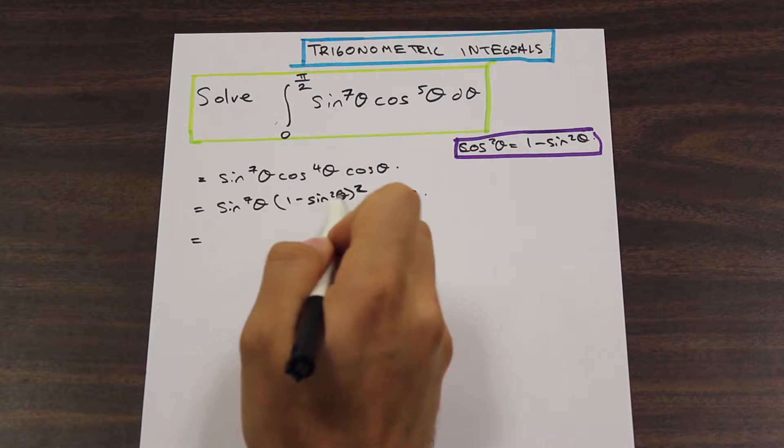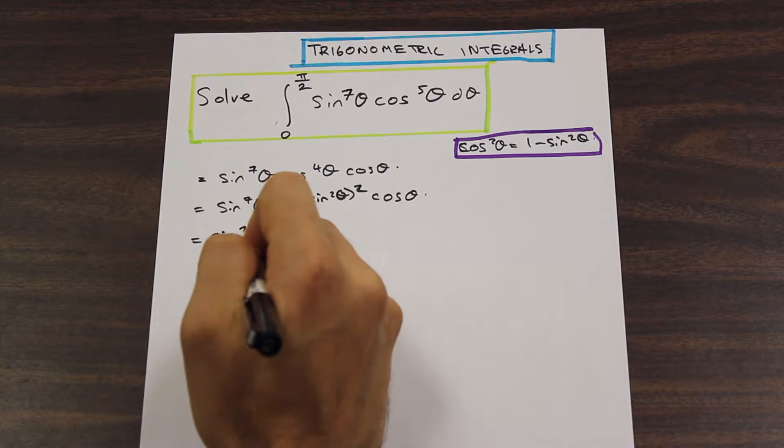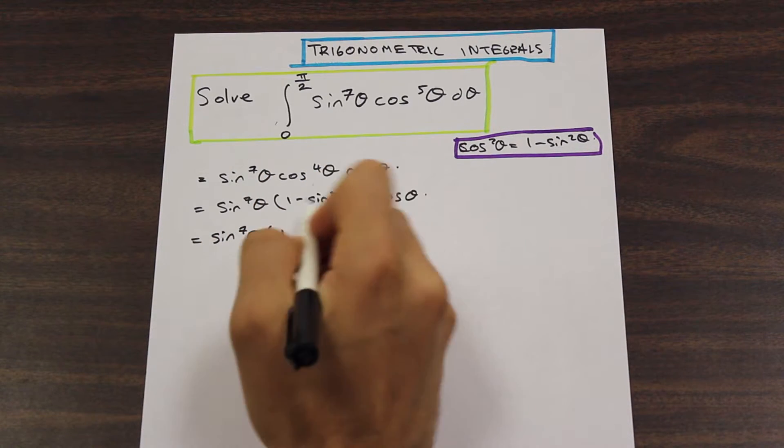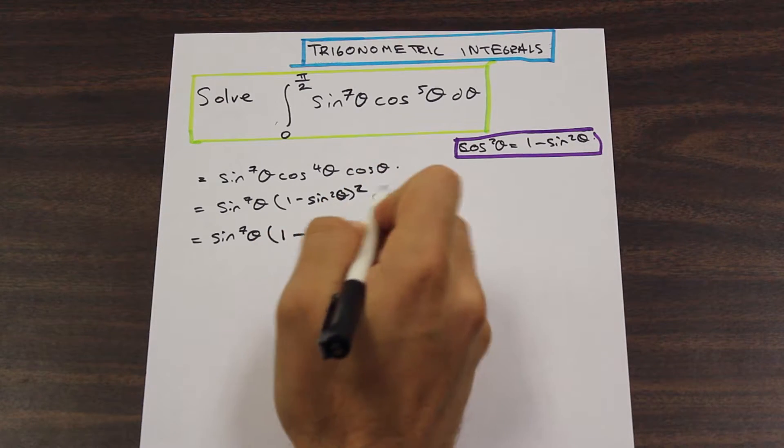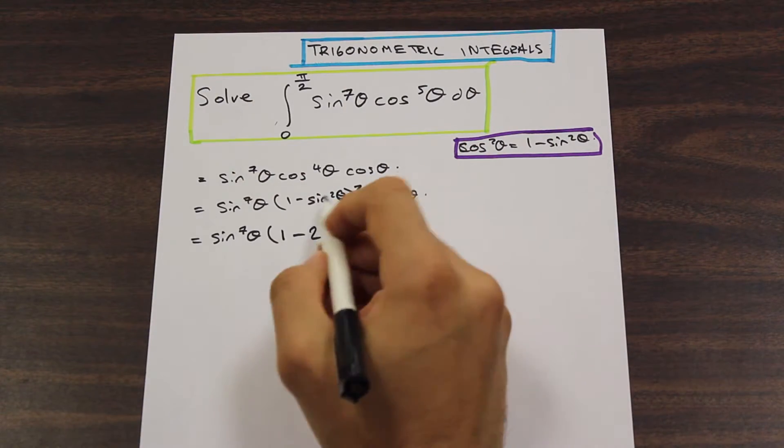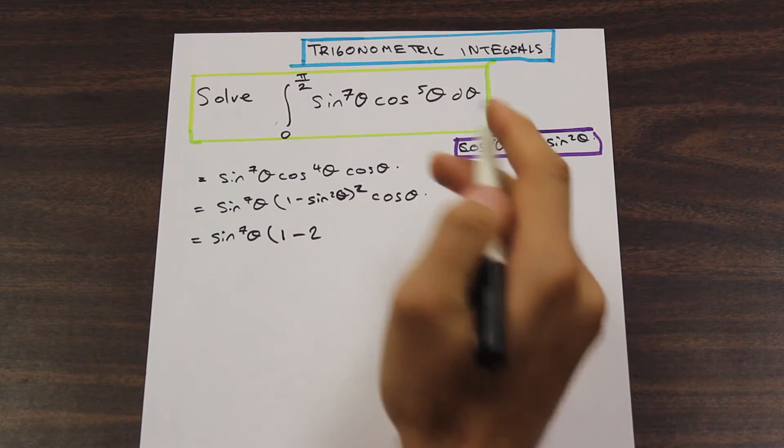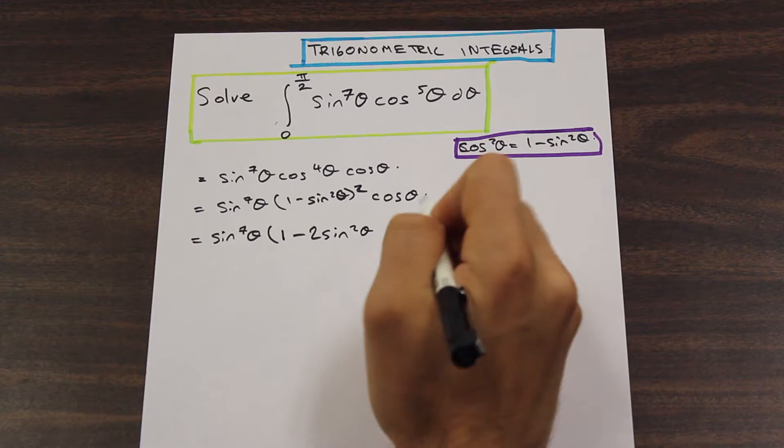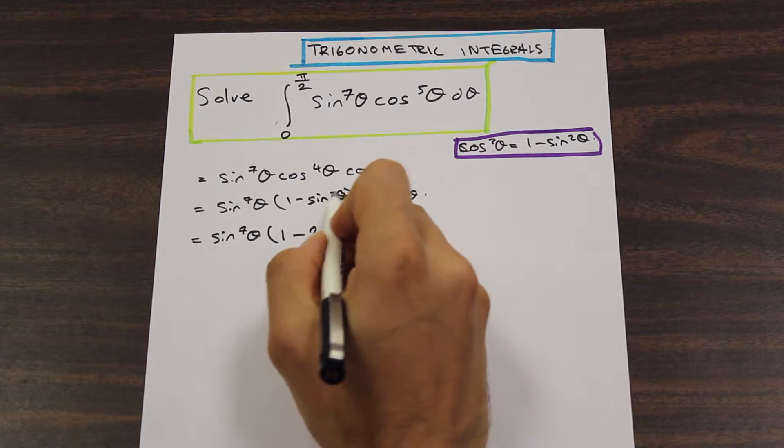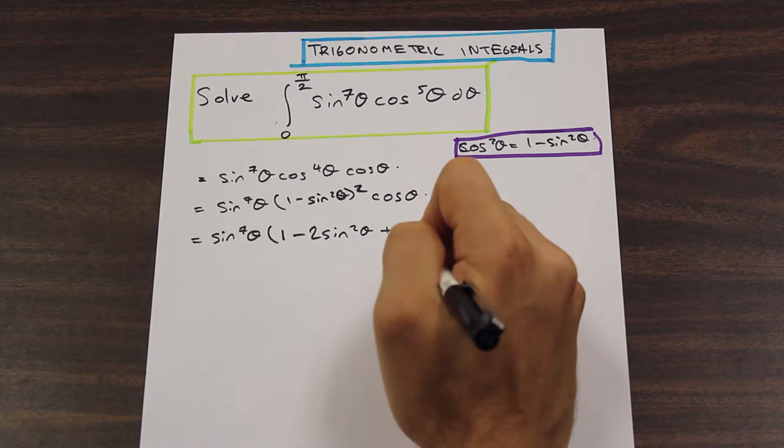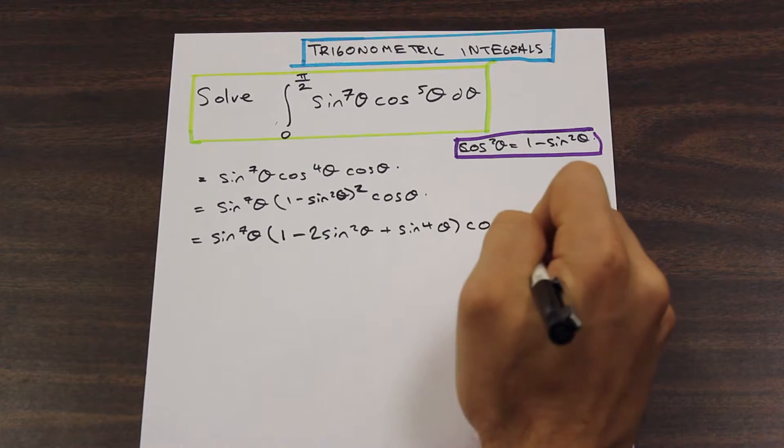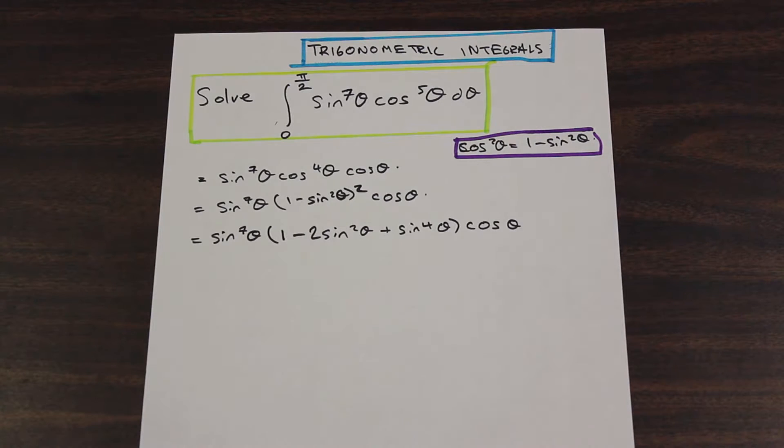Let's go ahead and expand inside this bracket. We have 1 minus sine squared theta squared. Let's not forget our sine to the 7th theta. So we have 1 minus, just do it in your heads. If you want to write it out, go ahead if that helps you. We have 1 minus 2 sine squared theta, and then we have plus sine squared theta squared, which is sine 4th theta, and that is times cos theta. Very good. We're moving along here.